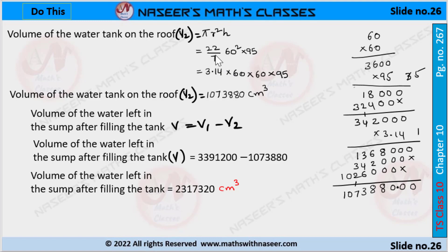Using pi = 3.14 and 60 squared = 60 × 60, after multiplying these values we get V2 = 1,073,880 cubic centimeters.